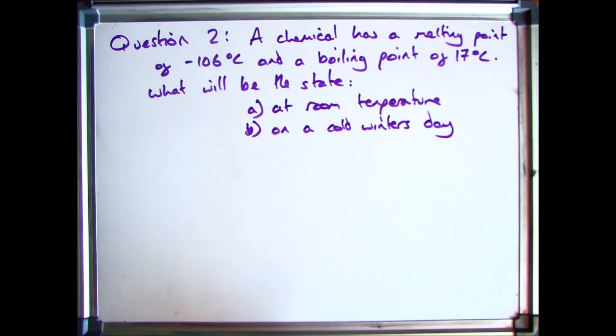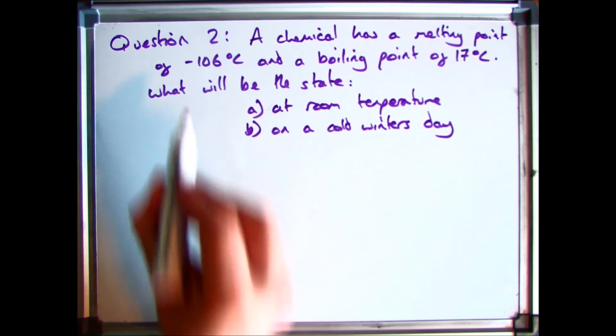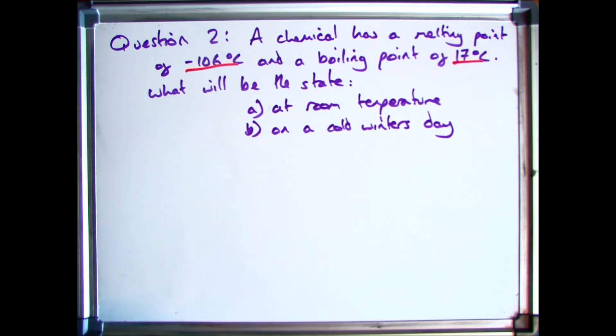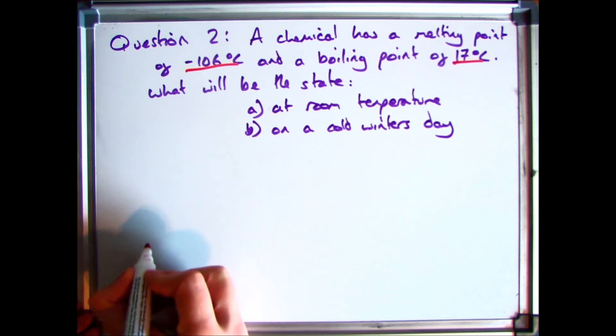Here we have another example. So it says a chemical has a melting point of minus 106 degrees and a boiling point of 17. What will be the state A at room temperature and B on a cold winter's day. So do the same again. Draw your temperature line.